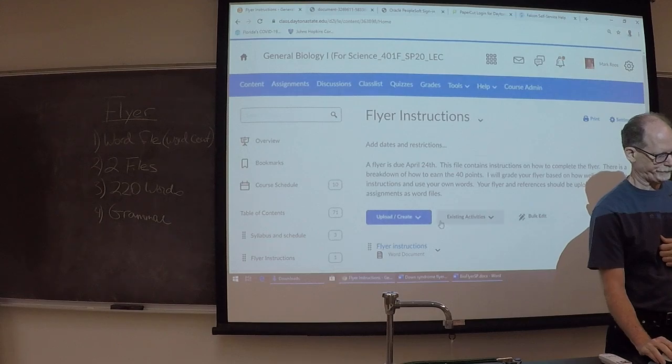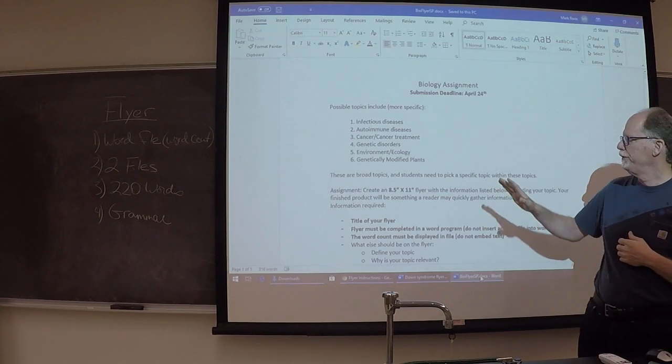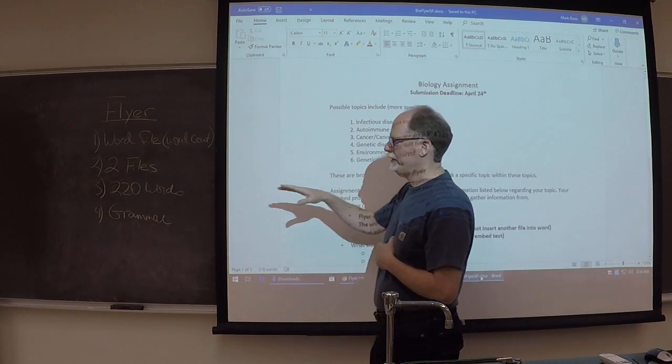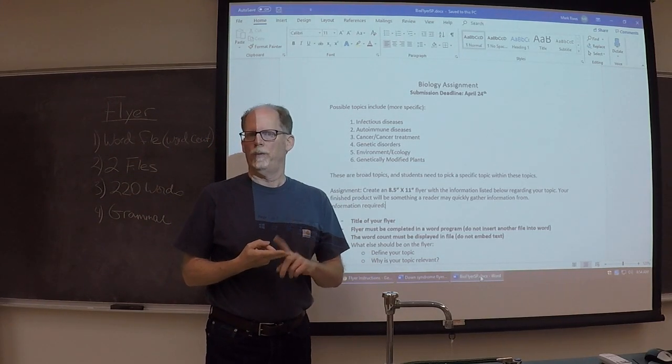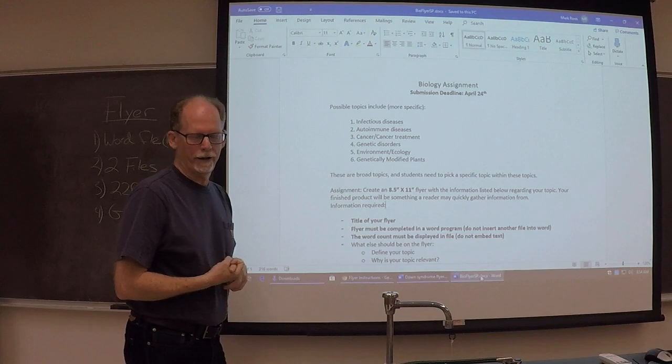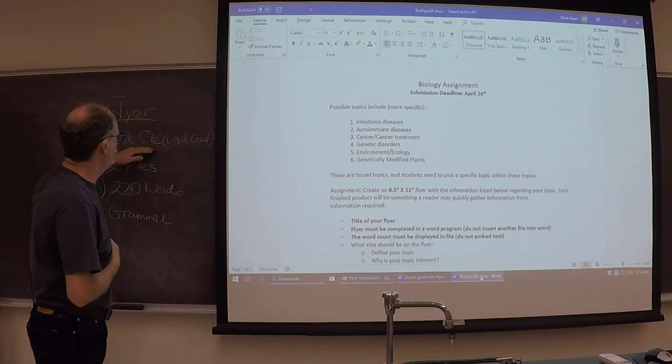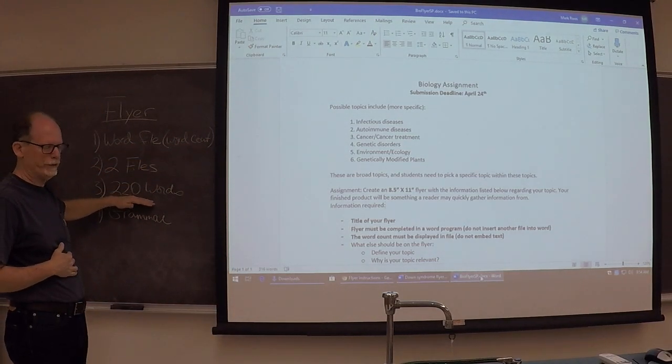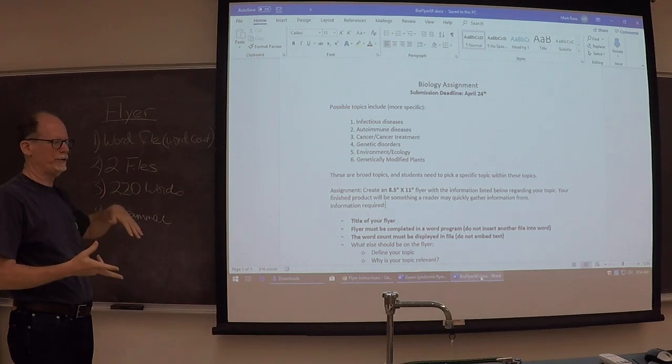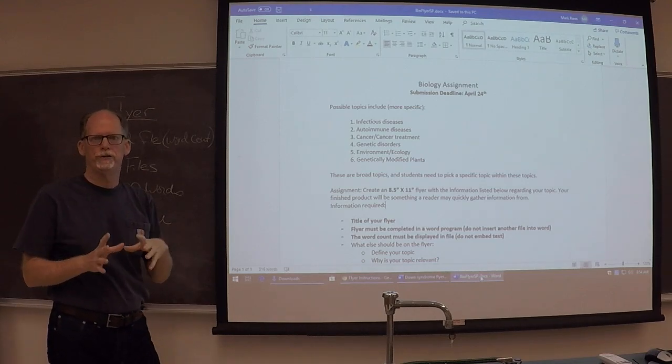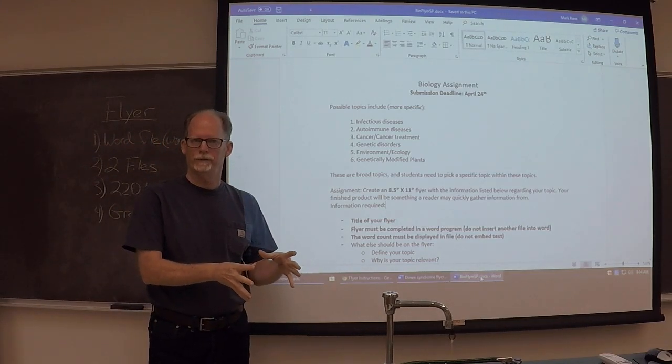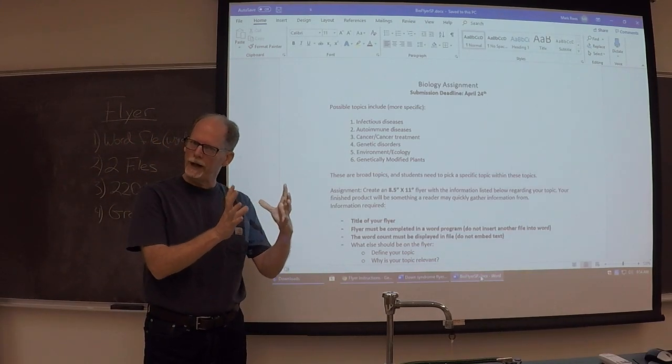Follow the directions. If it's not a Word file, I don't want JPEGs and I don't want it to be in PDF format. It needs to be a Word file. Make sure you have 220 words. If you don't have 220 words, minus 10. It's not two files. Two files means one is your references, right? A list of three references—that's one file. Submit that to the assignment folder.